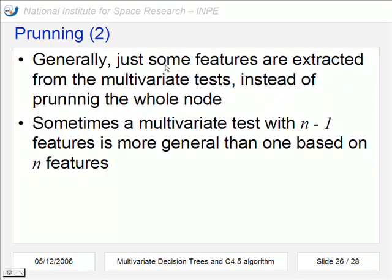Generally we have to extract just some attributes or features of the tests instead of pruning the whole node. This is in the multivariate approach. And in theory we can read that sometimes a multivariate test with n-1 features can be more general than one based on the whole set n of features.